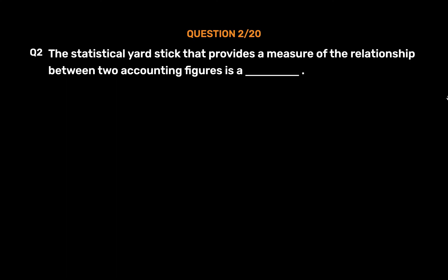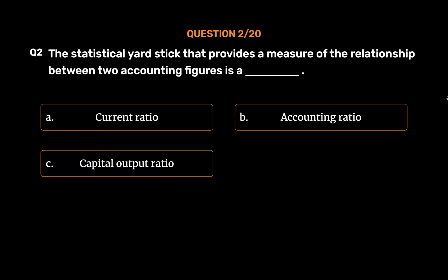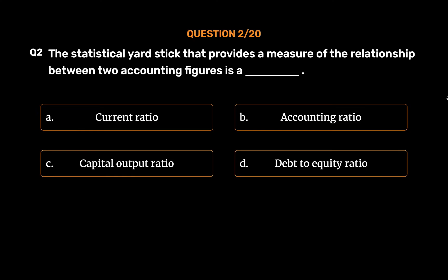Option A: Current Ratio. Option B: Accounting Ratio. Option C: Capital Output Ratio. Option D: Debt to Equity Ratio. The correct answer is Option B: Accounting Ratio.